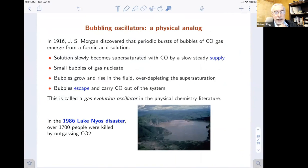Our work involves an analog to what's called bubbling oscillators. In the physical chemical physics literature about 100 years ago, this was discovered by Morgan. The idea is that you have a solution in which some formic acid solution is producing a slow supply of carbon monoxide in solution. Slowly this is being produced inside the solution. Bubbles of gas eventually nucleate, they start to grow, and they rise in the fluid and escape. As they grow, once they form, they start exploiting the supersaturation, they grow pretty fast. Eventually they escape, and the supersaturation is eliminated, and the system oscillates in this way, producing oscillating bursts of escaping gas.